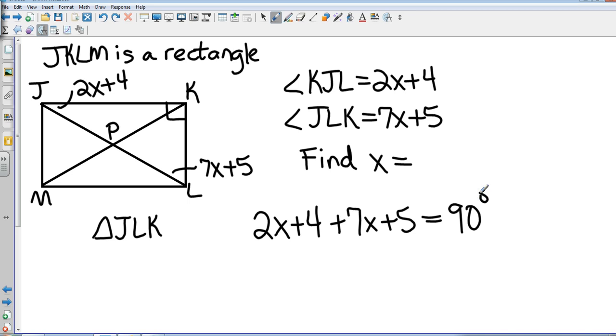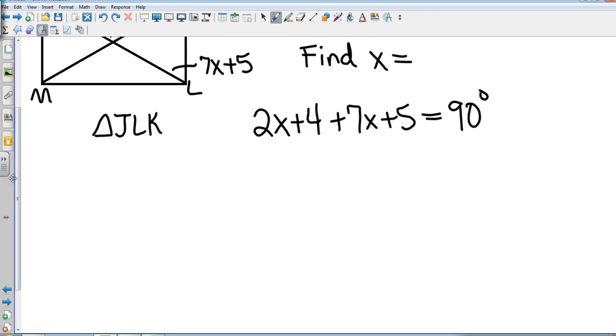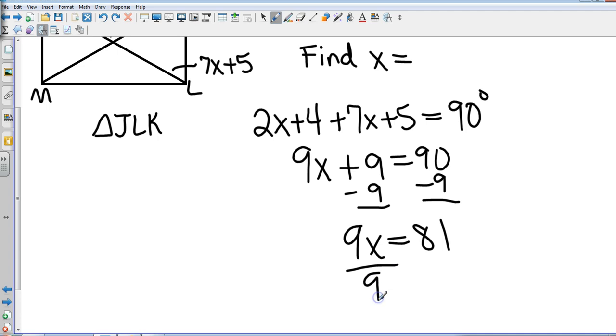Again, those two angles added together will have to equal 90 because angle K is 90, and 90 plus 90 is going to give me 180 degrees. So that's going to give me 9x plus 9 equals 90, subtract 9 from both sides, 9x equals 81, giving me an x value of 9.